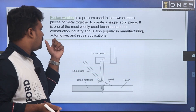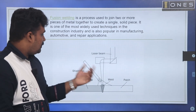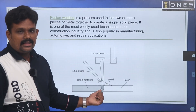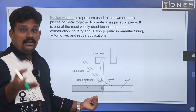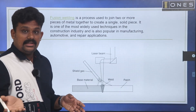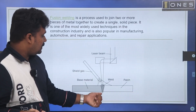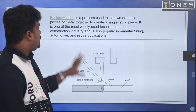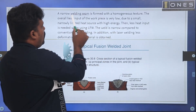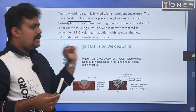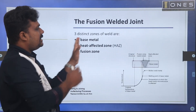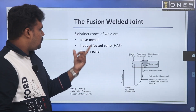Fusion welding is used in manufacturing, automotive, and repair applications. It uses a laser beam or base metals with shielding gas provided. We use SMAW, TIG welding, and shielding gas to prevent oxidation. Fusion welding forms two welding seams resulting in a homogeneous structure. Looking at a typical fusion weld joint, there are three distinct zones: base metal, heat affected zone, and fusion zone.